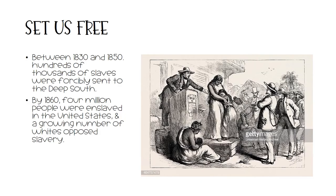Between 1830 and 1850, hundreds of thousands of slaves were forcibly sent to the deep South. By 1860, 4 million people were enslaved in the United States, and a growing number of whites opposed slavery.